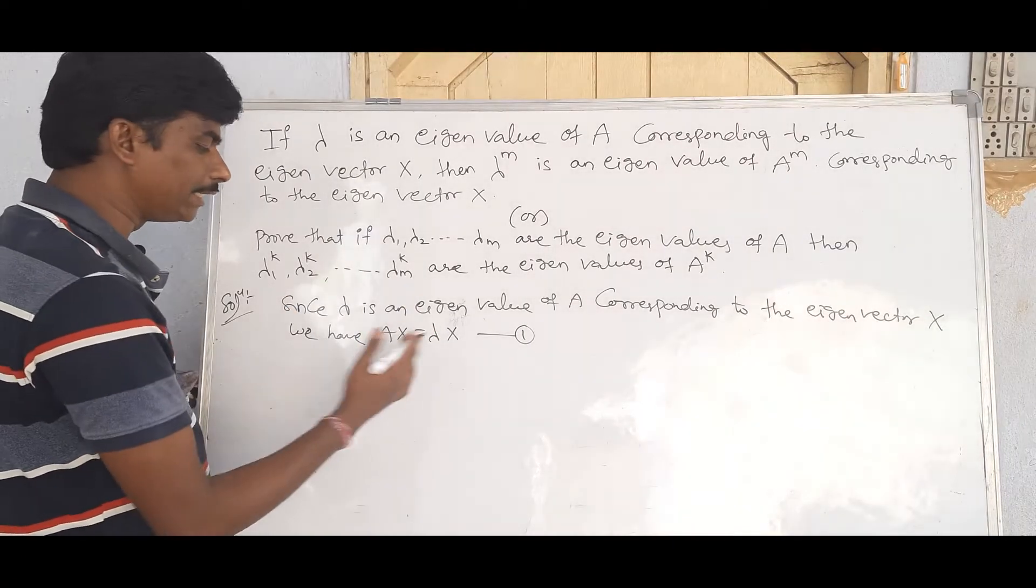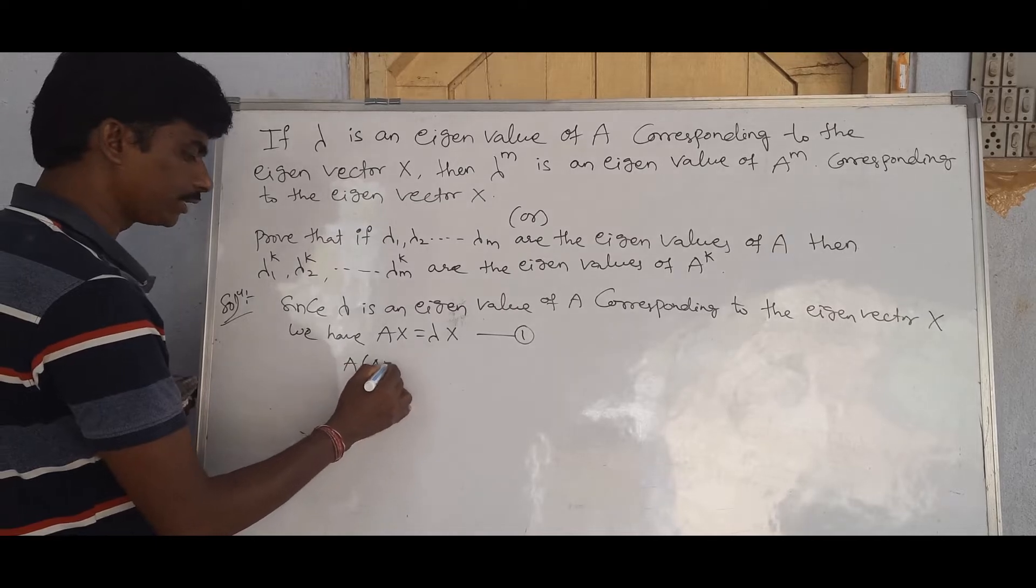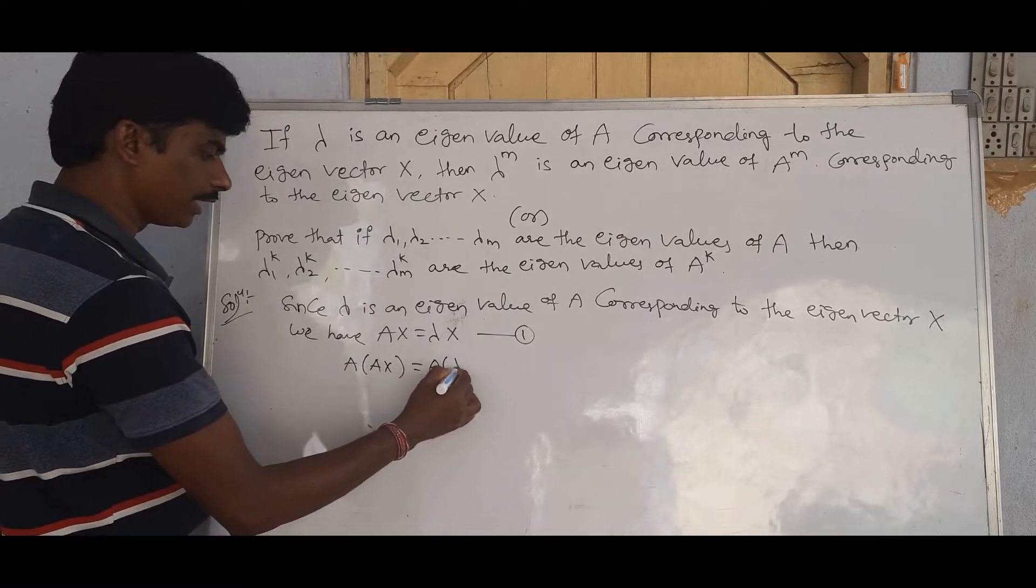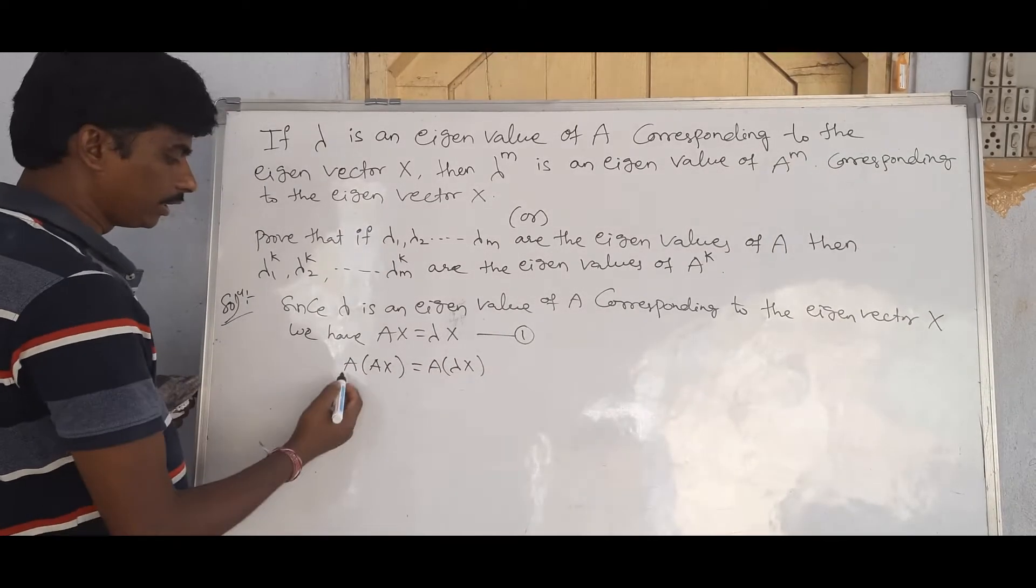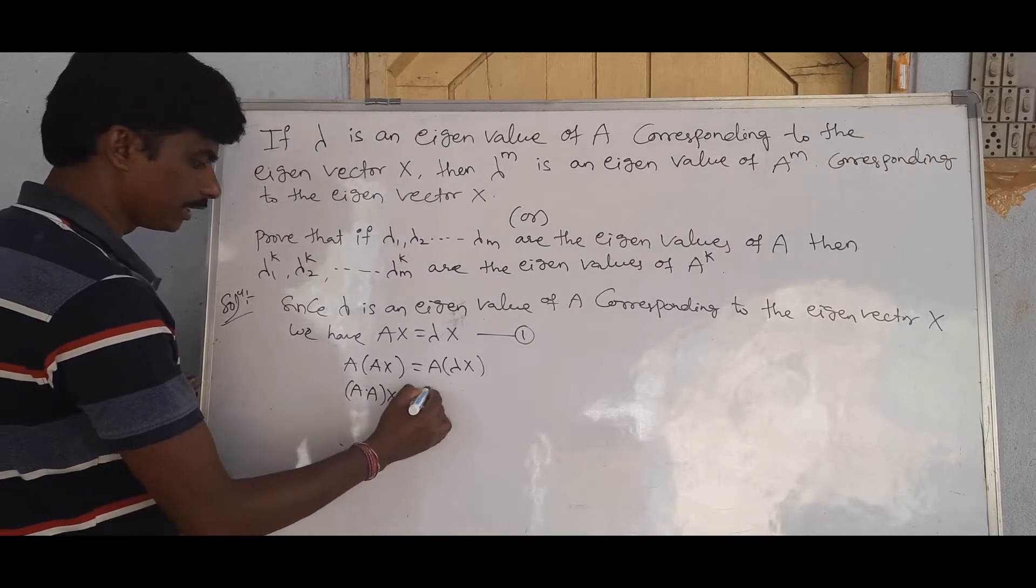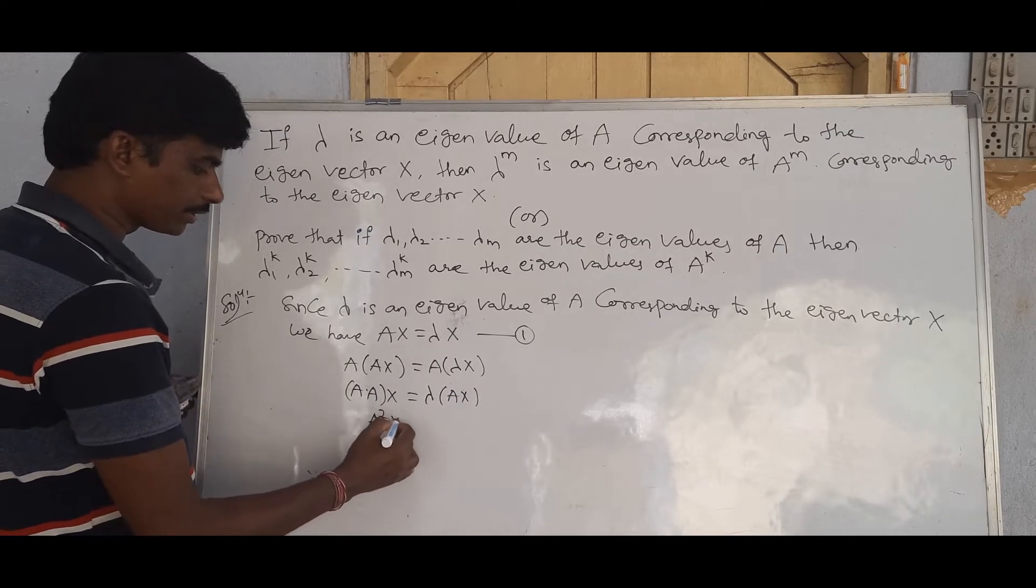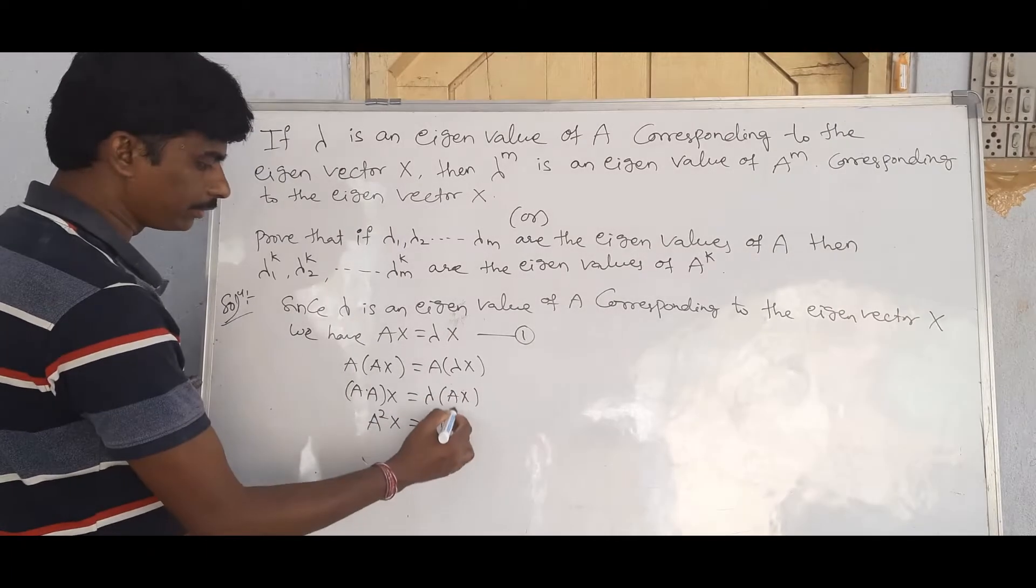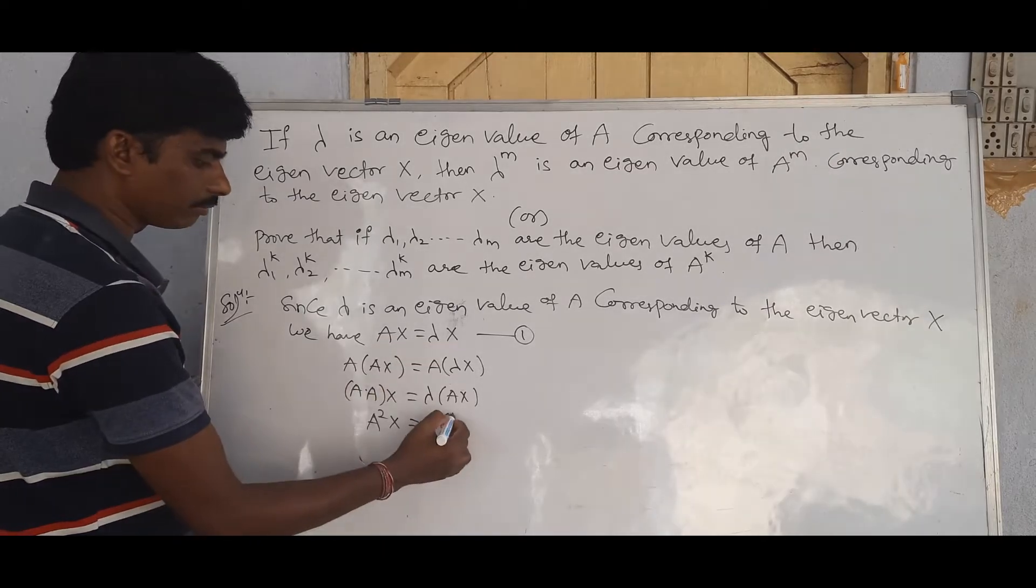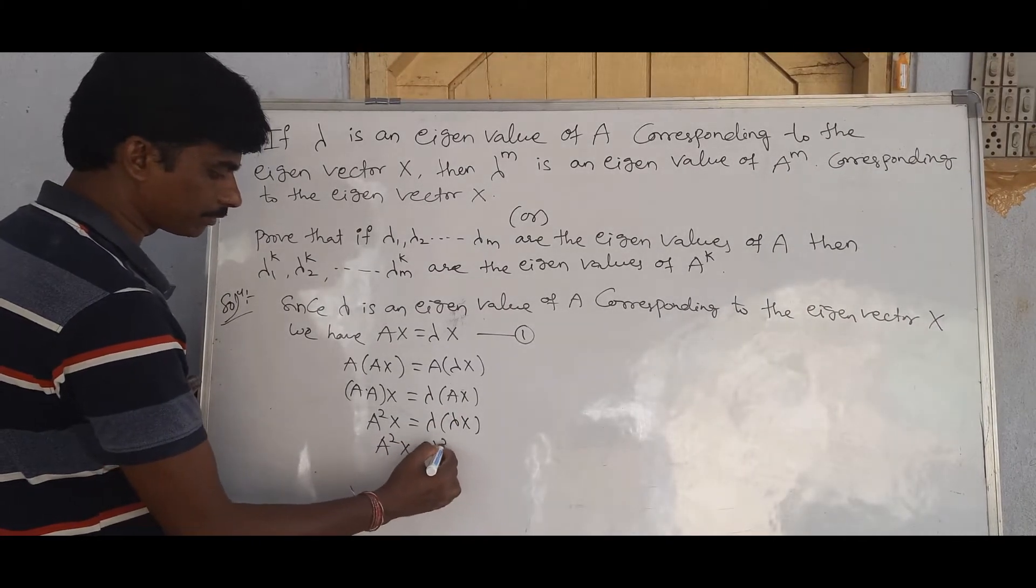Multiply both sides by A. A into AX equal to A into lambda X. This gives A square into X equal to lambda into AX. So A square X equal to lambda square X. And lambda square is an eigenvalue of A square.